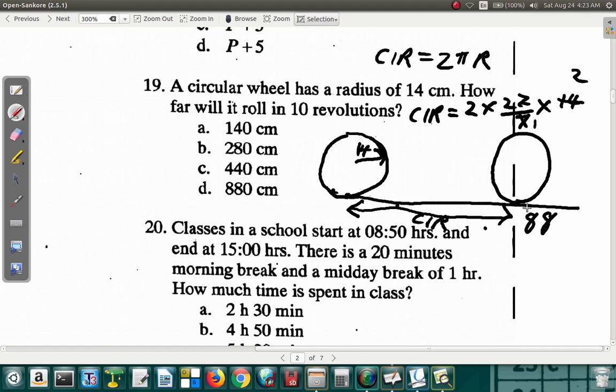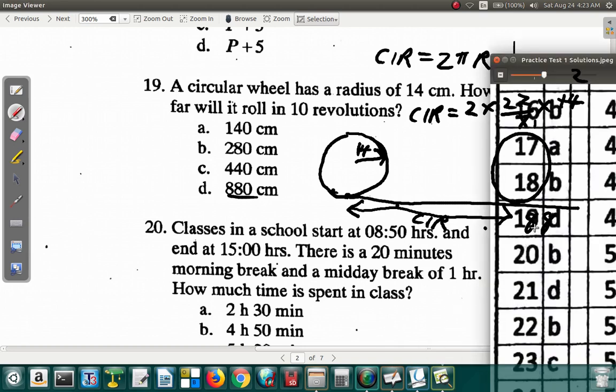How many would it cover in 10 revolutions? Let's multiply the 88 by 10. You get 880. So, question 19 D. That would be question 19 D.